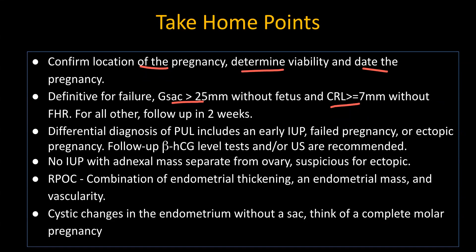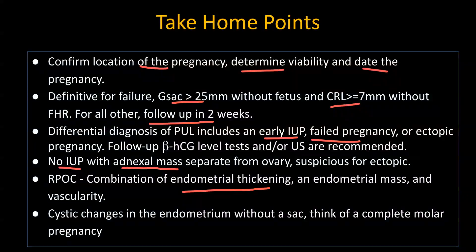If the CRL is less than 10 millimeters, we need to date it at a subsequent scan — either a first trimester scan or a follow-up in two weeks. If it's a pregnancy of unknown location or uncertain viability, a follow-up in two weeks is suggested. For a pregnancy of unknown location, differentials include a very early intrauterine pregnancy, a failed pregnancy, or an ectopic pregnancy — suggest follow-up in two weeks with beta-HCG level correlation. If you don't see an intrauterine pregnancy, look for an adnexal mass separate from the ovary to suggest ectopic pregnancy. When you see a thickened endometrium or an endometrial echogenic mass with vascularity, think of RPOC — make sure you look at the spectral flow to distinguish it from an AVM. Finally, if you see an expanded endometrial cavity with cystic changes, think of a complete molar pregnancy.